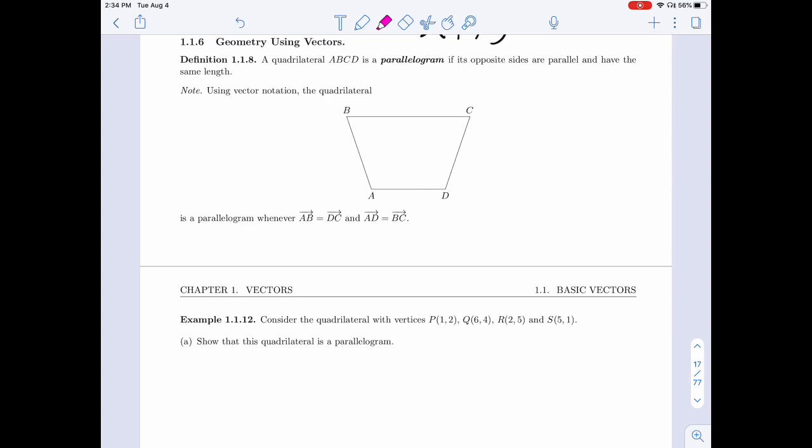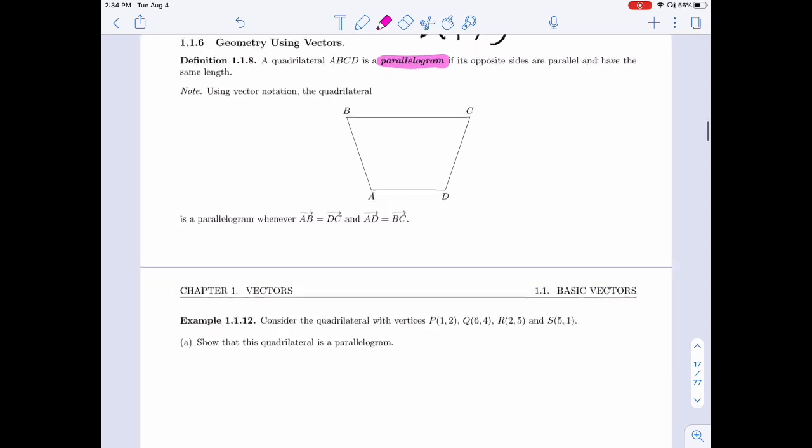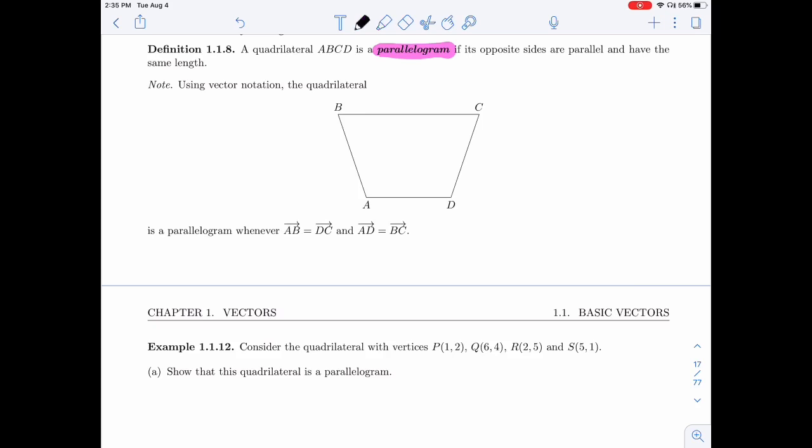A quadrilateral ABCD is called a parallelogram if its opposite sides are parallel and have the same length. Parallel with the same length, those are things that work well with vectors, so let's translate that into vector notation.